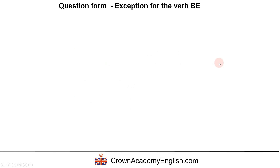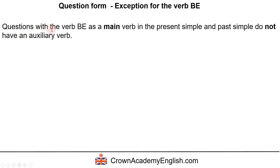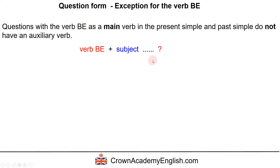Now there is an exception to the form. The exception is with the verb 'be'. When we use the verb 'be' as a main verb in the present simple and the past simple, it does not have an auxiliary verb. It's a much simpler form — there is no auxiliary verb.